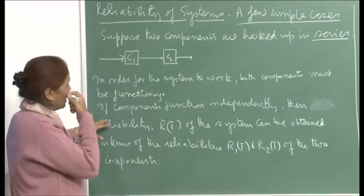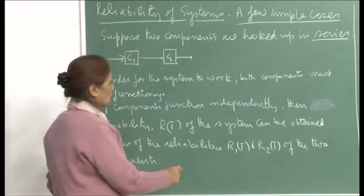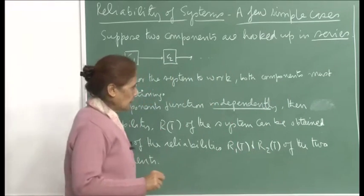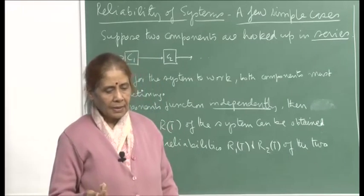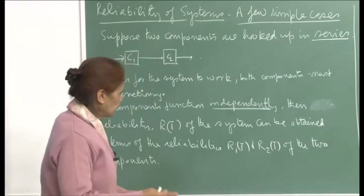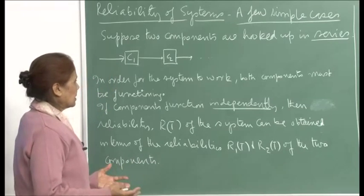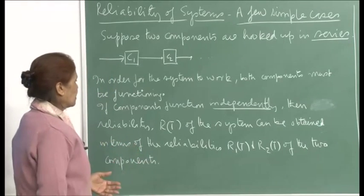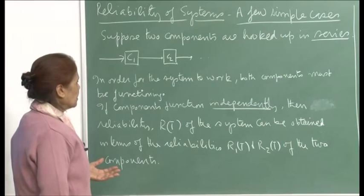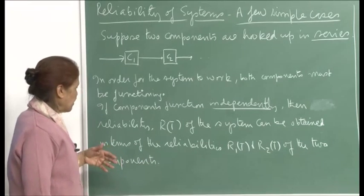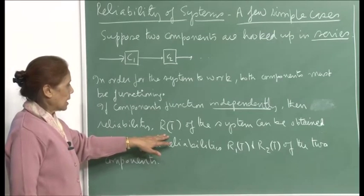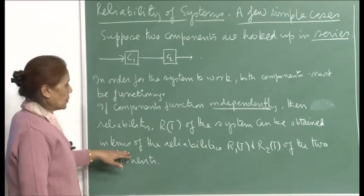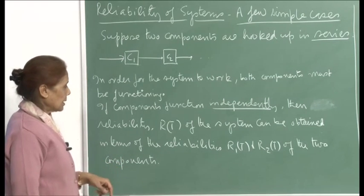We also make the assumption of independence. This is important; otherwise things will get complicated. We have learned methods for handling dependence, but right now we just assume independence to show how to compute the reliability of the system. If they are functioning independently, then the reliability r(t) of the system can be obtained in terms of the reliability r1(t) and r2(t) of the two components.